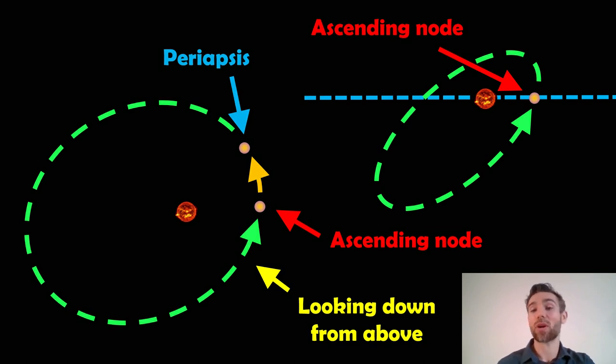The ascending node is where it passes through that plane of reference and it's traveling north. So there's going to be two different locations on that orbit where they occur.